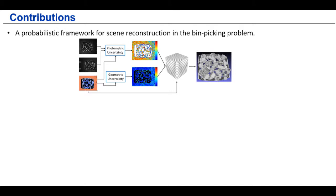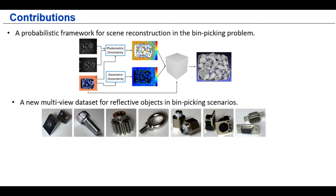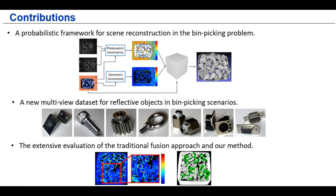And in summary, we made the following contributions. First of all, we create a complete framework for the scene reconstruction in the bin picking problem, which includes both depth uncertainty estimation and the probabilistic volumetric integration. And secondly, we released a Multi-View dataset for the reflective objects in robotic bin picking scenarios, which can be used for evaluating depth fusion and other robot vision problems. And lastly, we evaluated the traditional fusion approach and our method for Multi-View depth fusion and its impact on the object pose estimation.